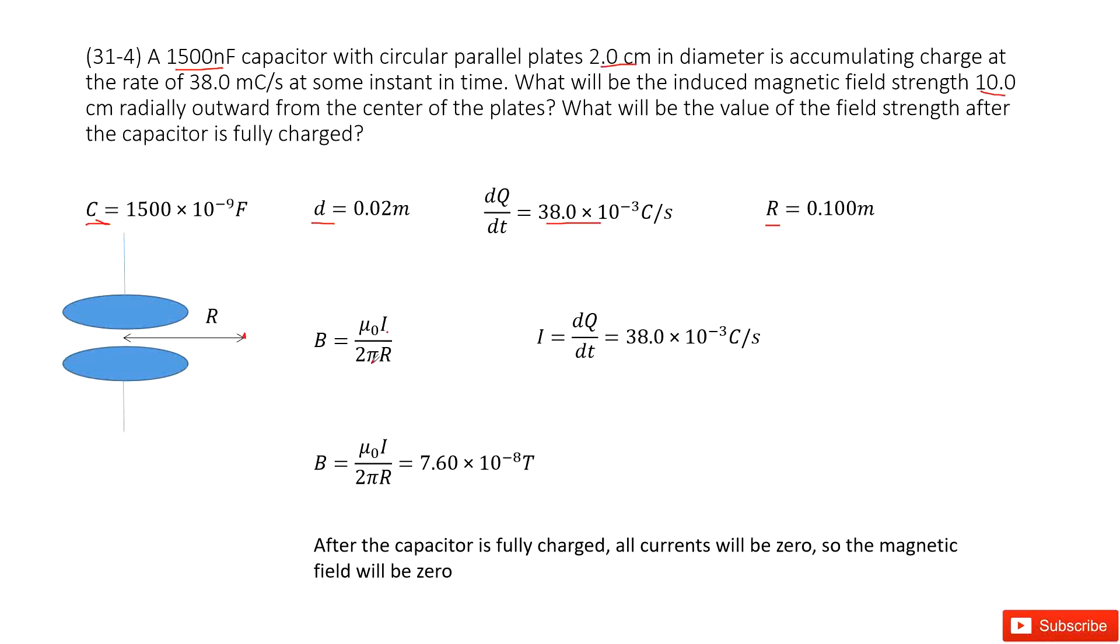Pi is another constant. Now we can input the quantities i and r inside, we get the answer there. See, this is a very small magnetic field. Next one.